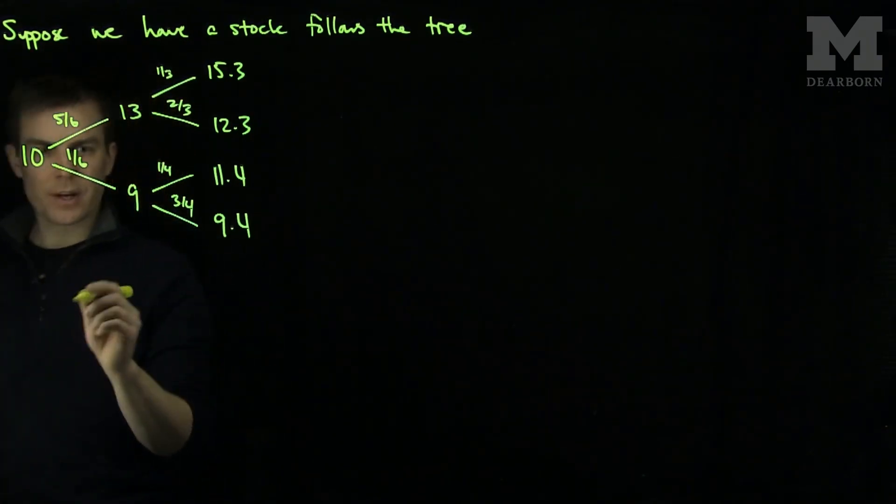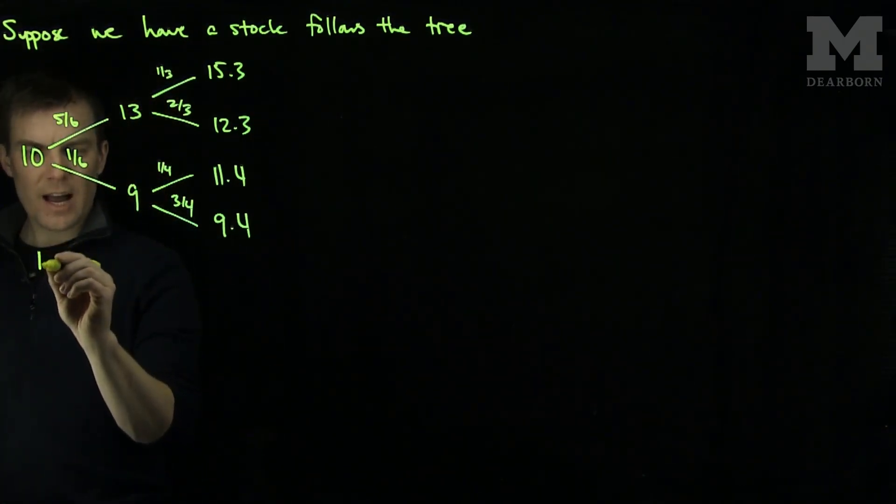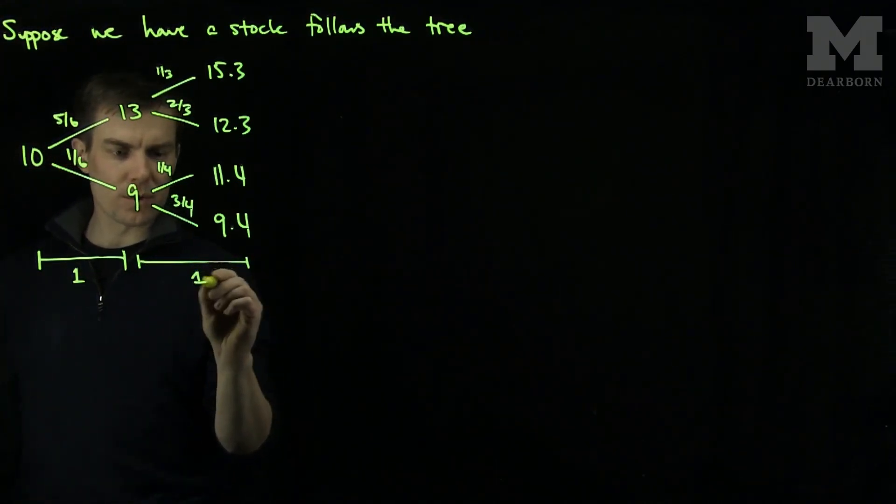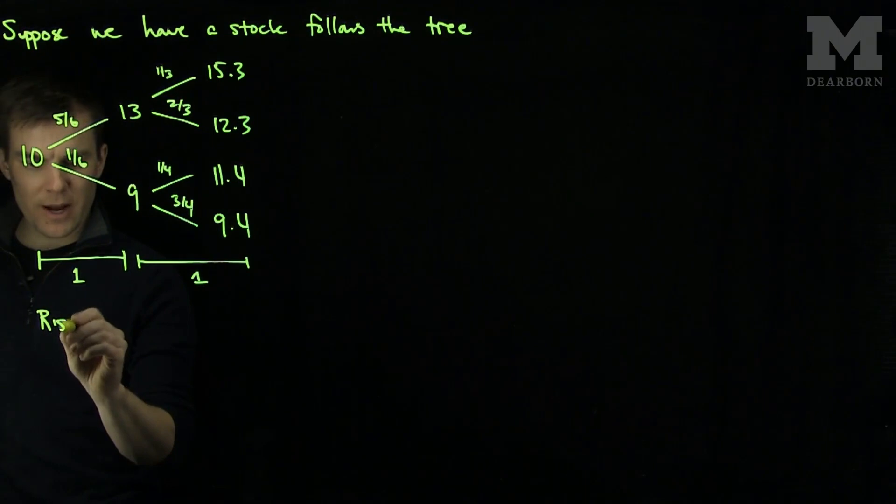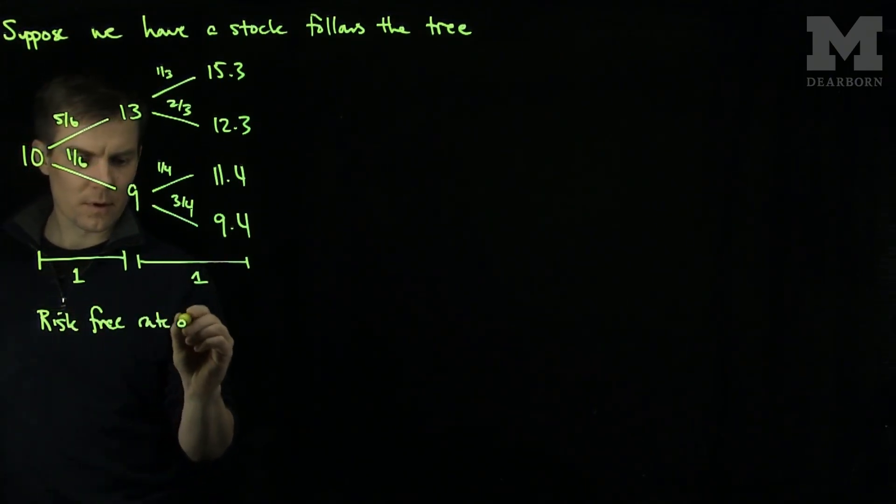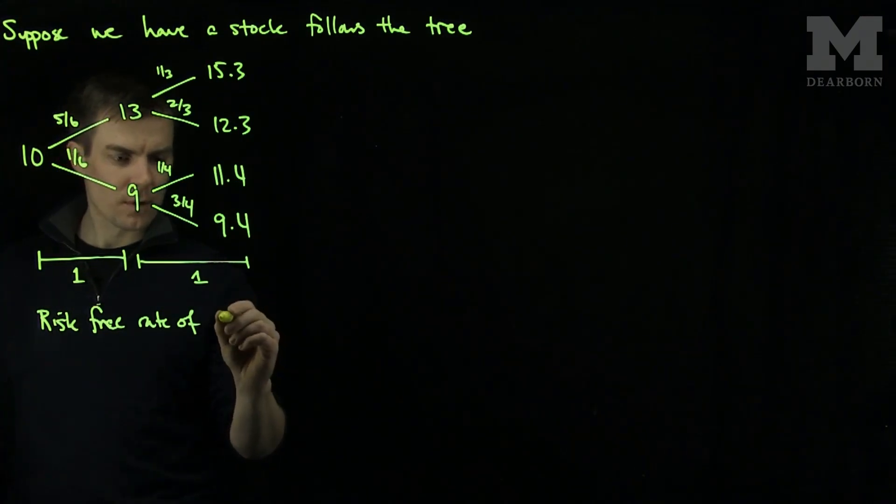And so this is my stock tree and each time step will be a time step of 1 unit. So this will occur over 1 unit and this will occur over 1 unit. And we'll assume that we have a risk free rate of 10%.